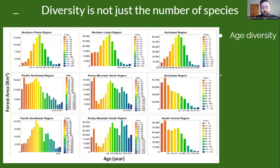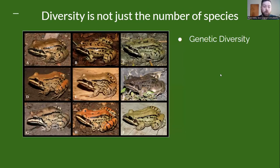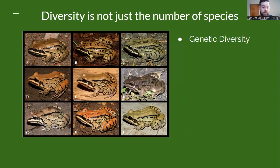Genetic diversity is also very important. This image shows the same species of frog displaying different colors and patterns — they're all able to interbreed and produce viable offspring. This is a naturally occurring phenomenon you'll see with most, if not every, species.